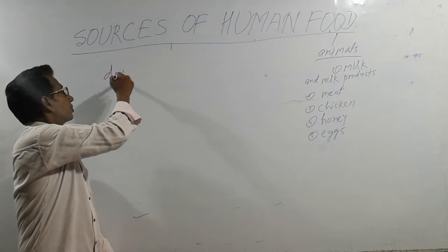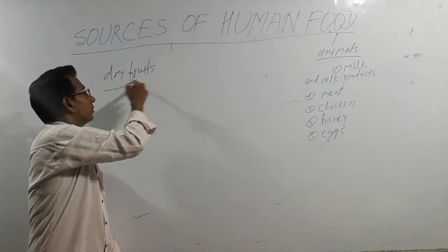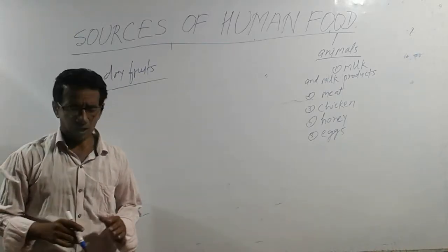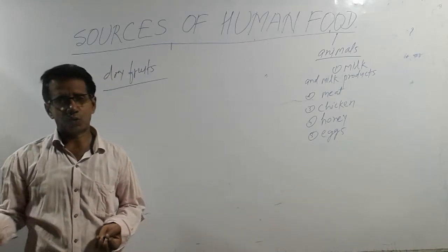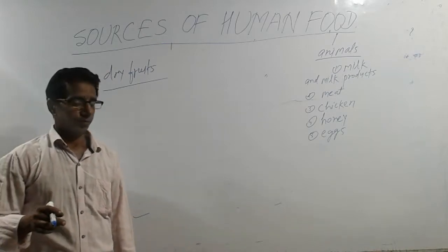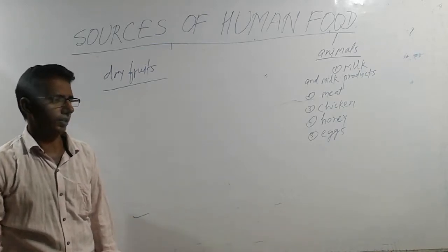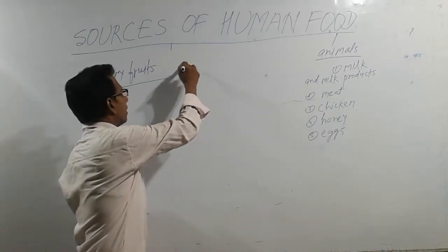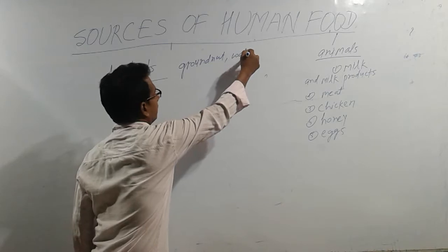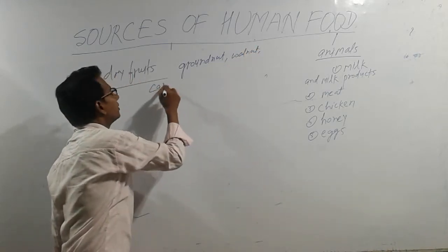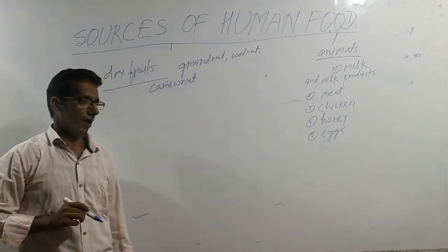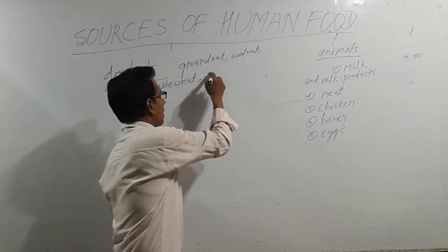We also get dry fruits from plants and dry fruits are very important to us because they contain minerals, vitamins, and proteins. The dry fruits that are eaten most commonly are groundnut, walnut, cashew nut, and coconut.